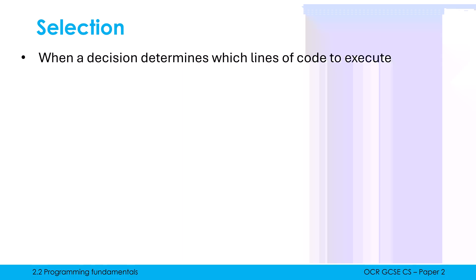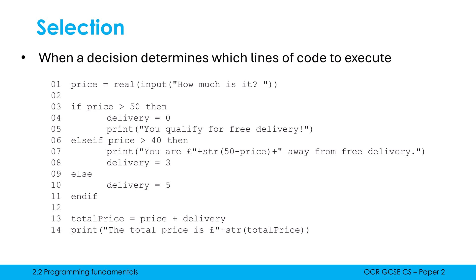Whereas selection is where we start to have decisions being made in our code. So a decision will determine which lines of code will be executed or not, which is essential to have any variety in our programs. You want there to be different things happening depending on things like user input. So here is some code, I'm showing line numbers of all of these examples, because typically they will give you some code and ask you to pick apart the code a little bit.